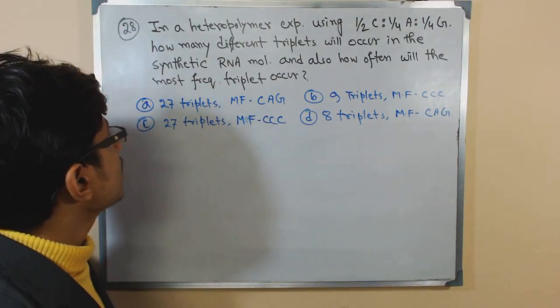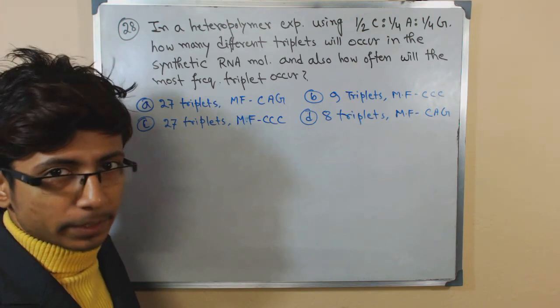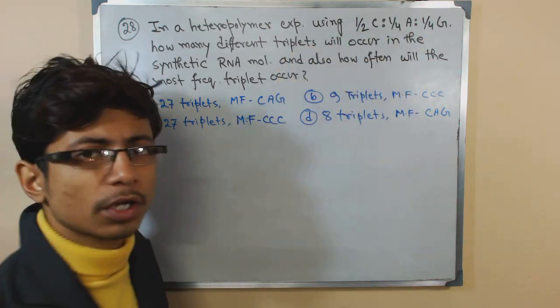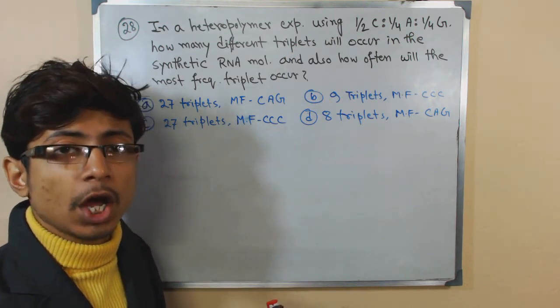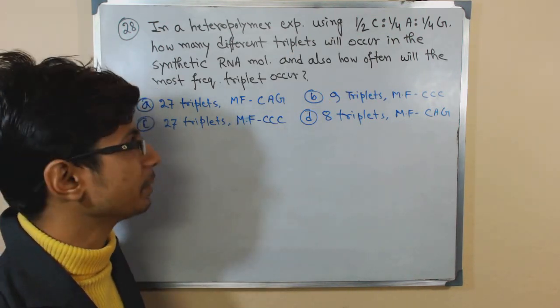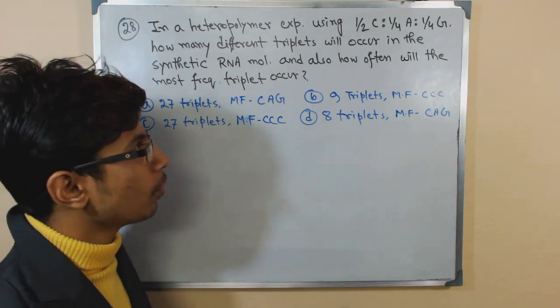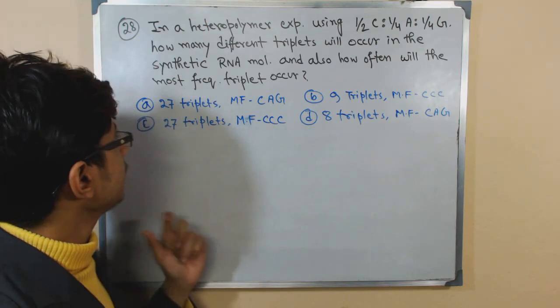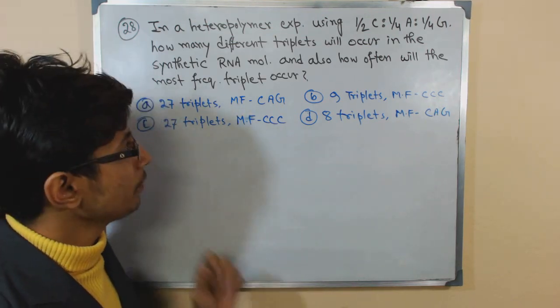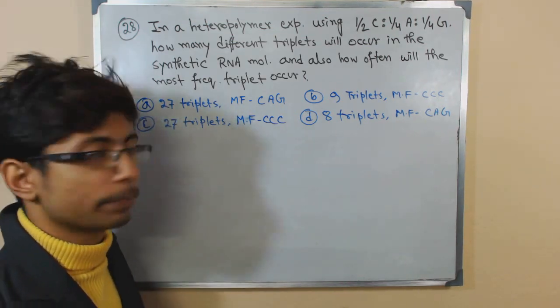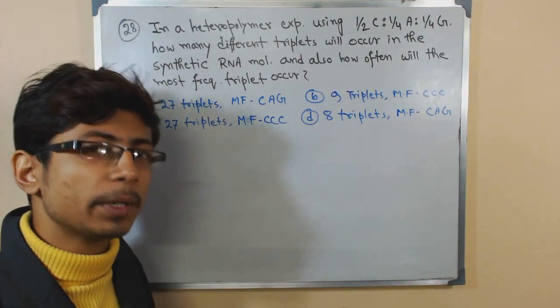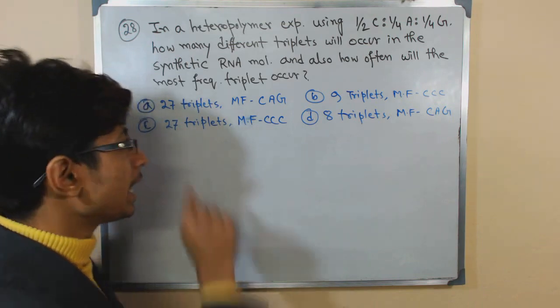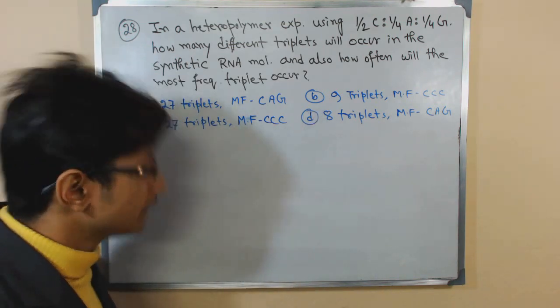It applies a very basic formula. In a heteropolymer experiment using 1/2 C, 1/4 A, and 1/4 G - these are the molar ratios of different quantities of bases taken for that experiment - how many different triplets will occur in synthetic RNA molecules, and also how often will the most frequent triplet occur? Which is the most frequent one and what is the frequency of occurrence? That is the question, and here come the four options for your answer.